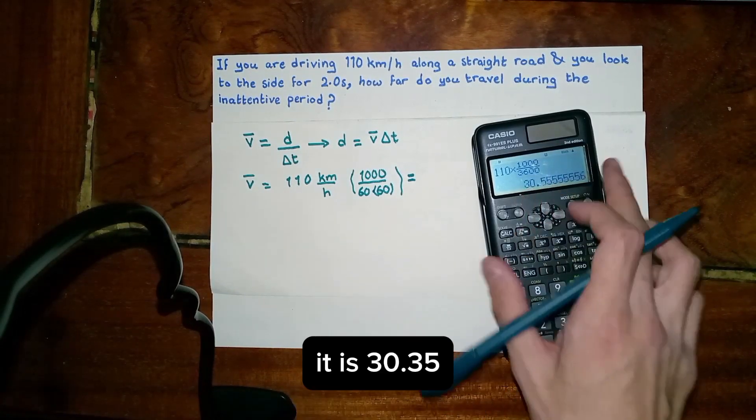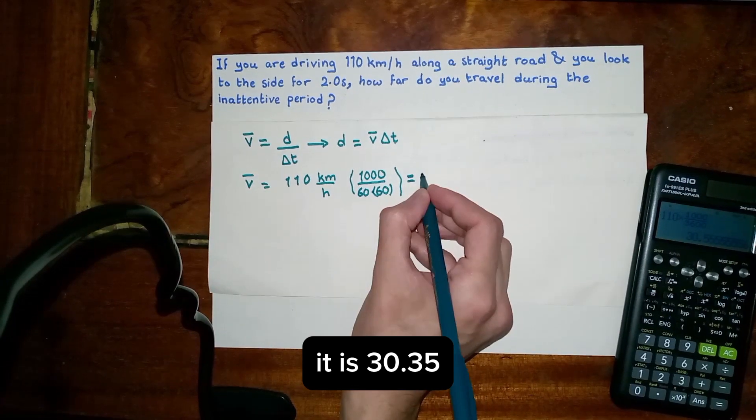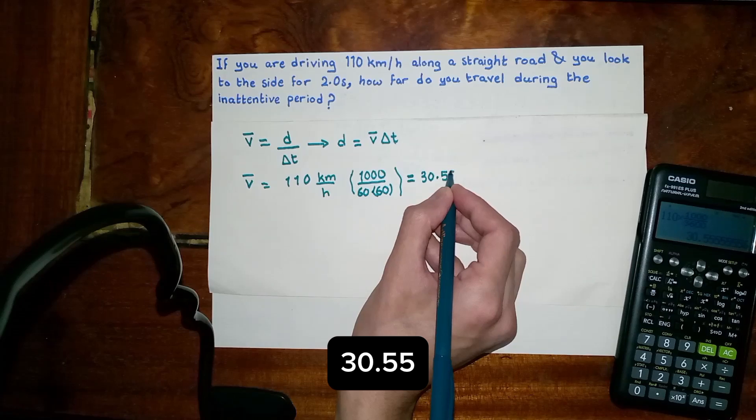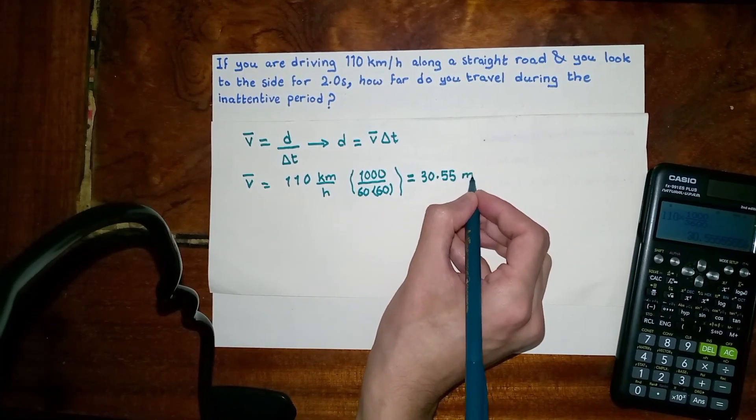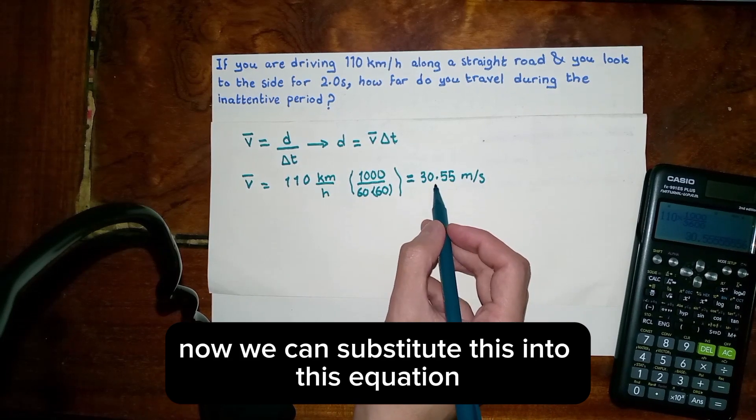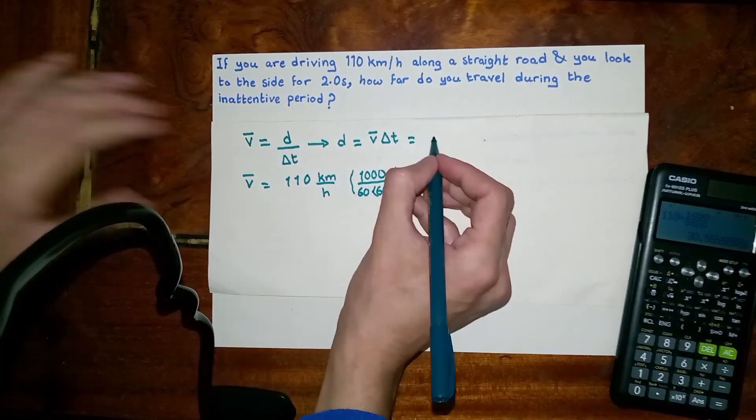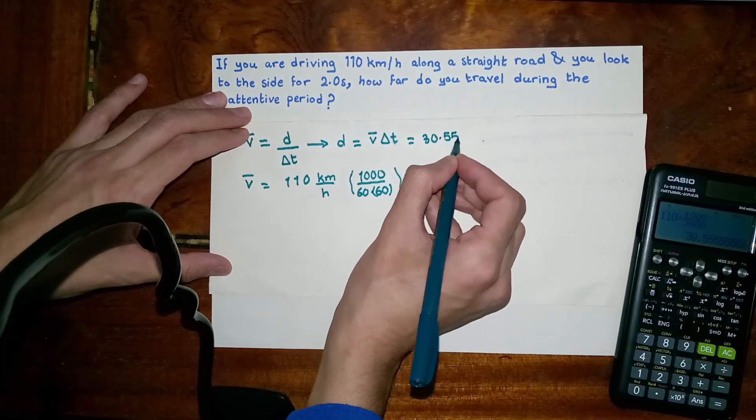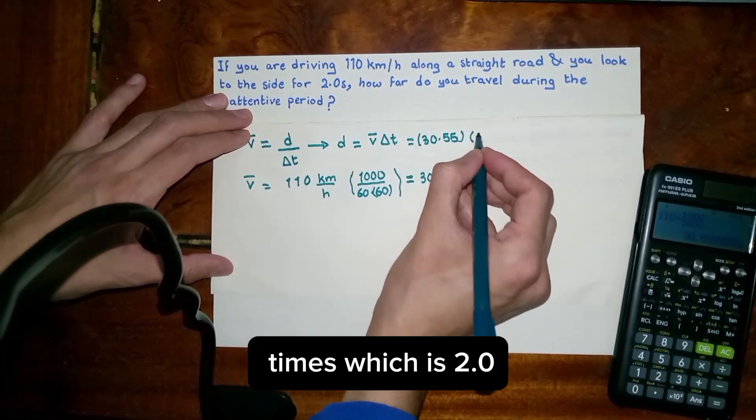This gives us 30.55 meters per second. Now we can substitute this into this equation, times the time which is 2 seconds.